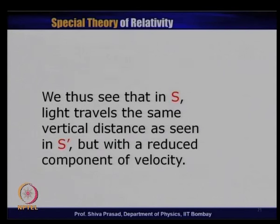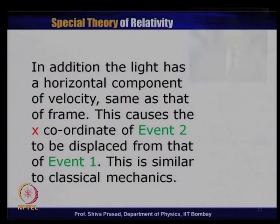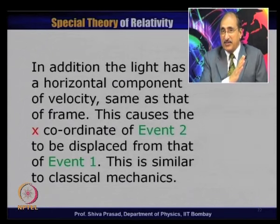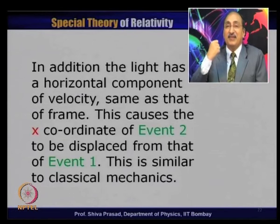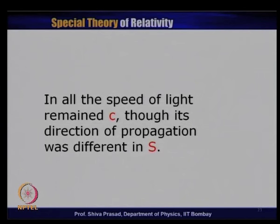In summary, in S frame the light travels the same vertical distance as in S', but with a reduced vertical velocity component c/γ. In addition, the light has a horizontal velocity component equal to v (same as the frame). This causes the x coordinate of event 2 to be displaced from event 1. The key difference from classical mechanics is that the y component of velocity has changed to maintain the speed of light at c in S frame.